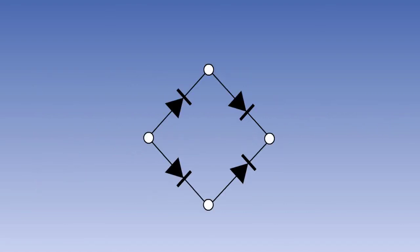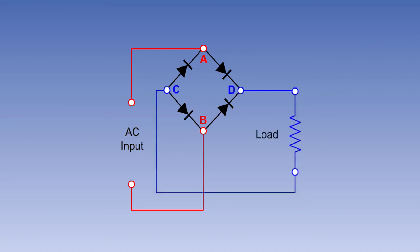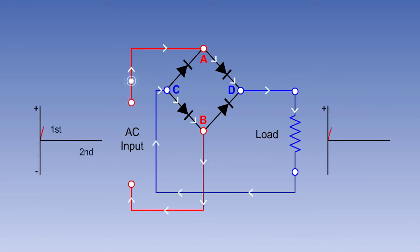To produce DC without gaps in the pulses, a full-wave bridge rectifier, as seen on the screen, can be used. The bridge has a diode rectifier on each leg. The AC supply is connected across the bridge at points A and B, and the output is taken from points C and D. In one half of the cycle of the AC input, point A will be positive and point B negative, so current will flow through the bridge and the load in the direction shown.